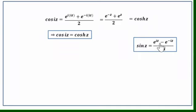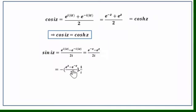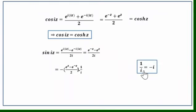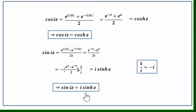Similarly, sin(iz) = (e^(i·iz) - e^(-i·iz)) / 2i = (e^(-z) - e^z) / 2i. Rewriting: (e^z - e^(-z)) / (-2) × (1/i). Since 1/i = i/i² = i/(-1) = -i, replacing 1/i by -i gives i × (e^z - e^(-z)) / 2, which is i·sinh z. So sin(iz) = i·sinh z.